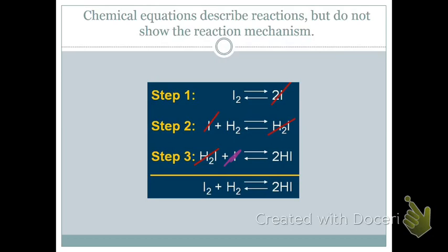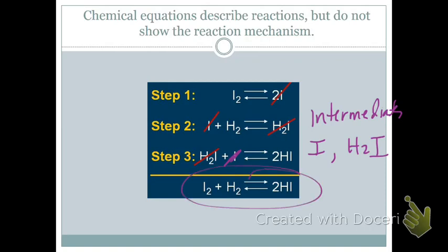The H₂I produced in step two is subsequently used up in step three to form the actual product. So our intermediates are the I atoms and the H₂I. When they cancel out, here's our overall reaction — that is the net overall change. But it's not actually what was going on during the reaction; we had to go through these steps.